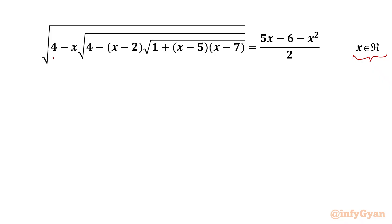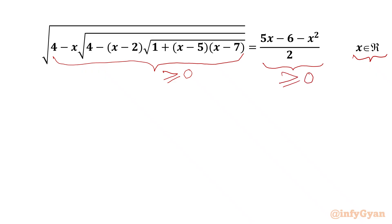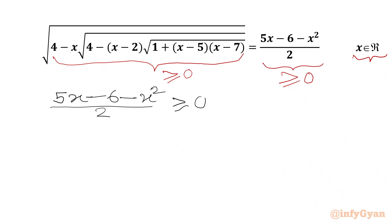Our radicand must be greater than or equal to 0, as a square root cannot be negative. The RHS must also be greater than or equal to 0. We will write (5x - 6 - x²) / 2, and this should be greater than or equal to 0. Multiplying by 2 and taking minus common from the numerator, we get minus of (x² - 5x + 6) ≥ 0.